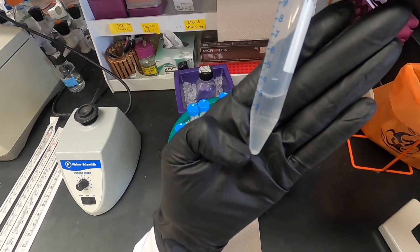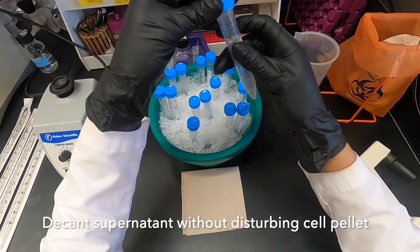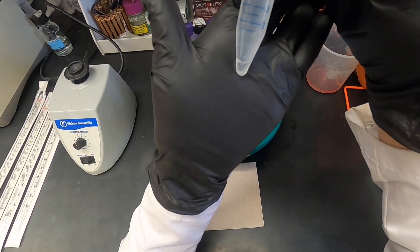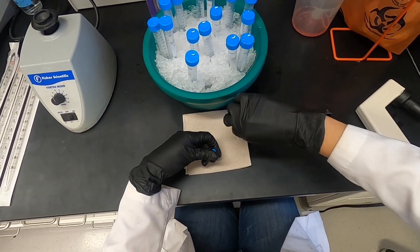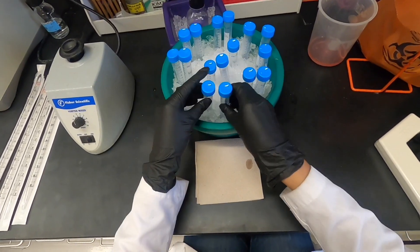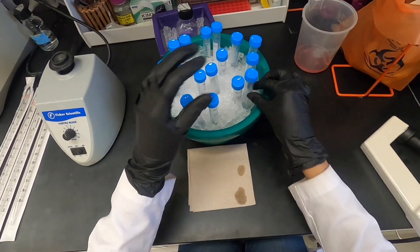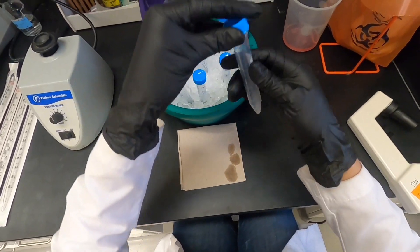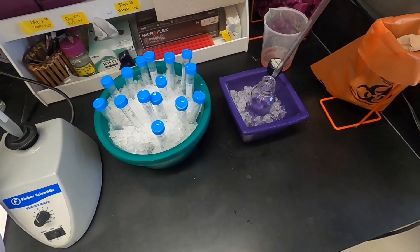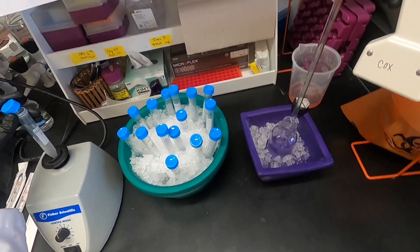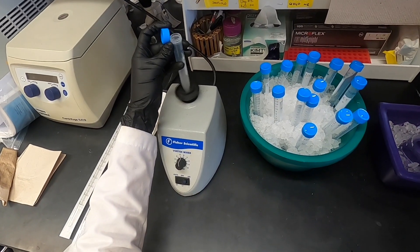Here you can see our cells have once again pelleted and we can easily discard the supernatant by inverting the tube over a waste container. When the PBS has been removed from all tubes, we will proceed to fix and permeabilize with 70% ethanol. It is important to vortex the tube while we add the 70% ethanol in order to prevent aggregation of our cells.